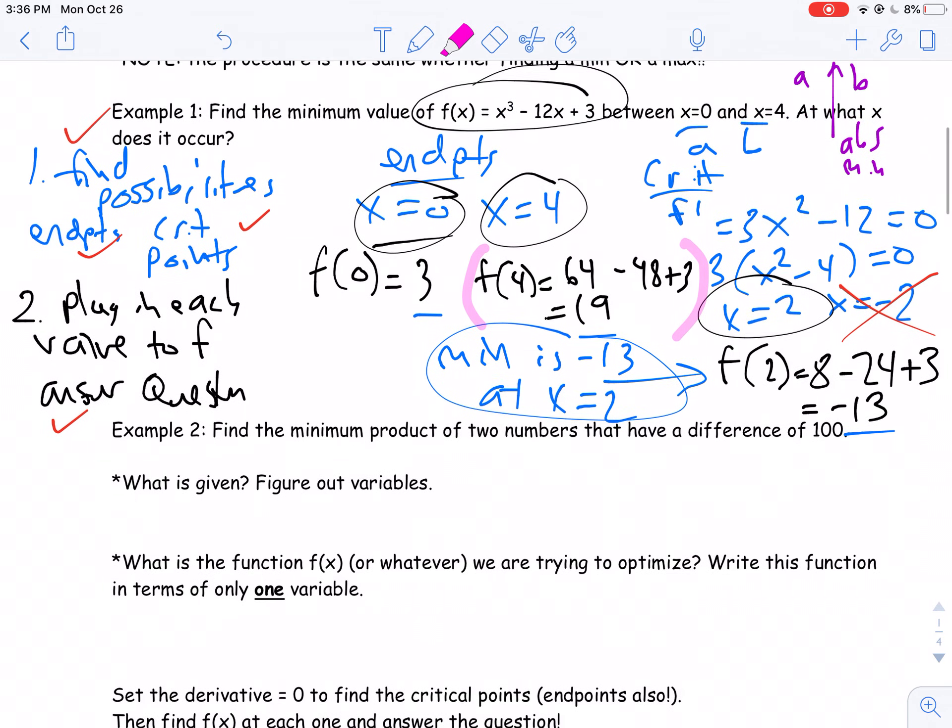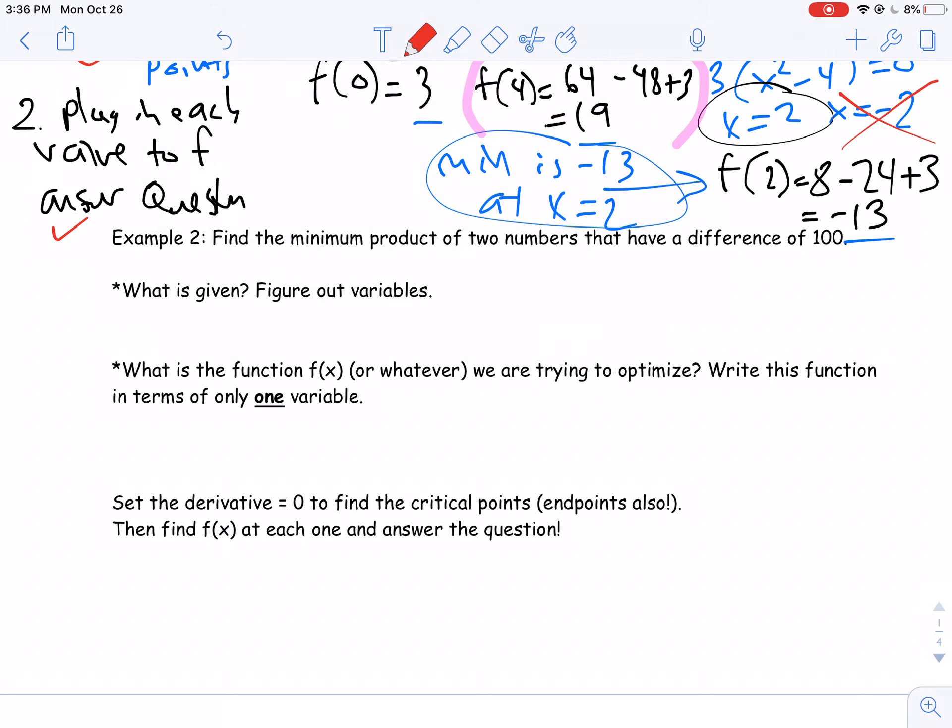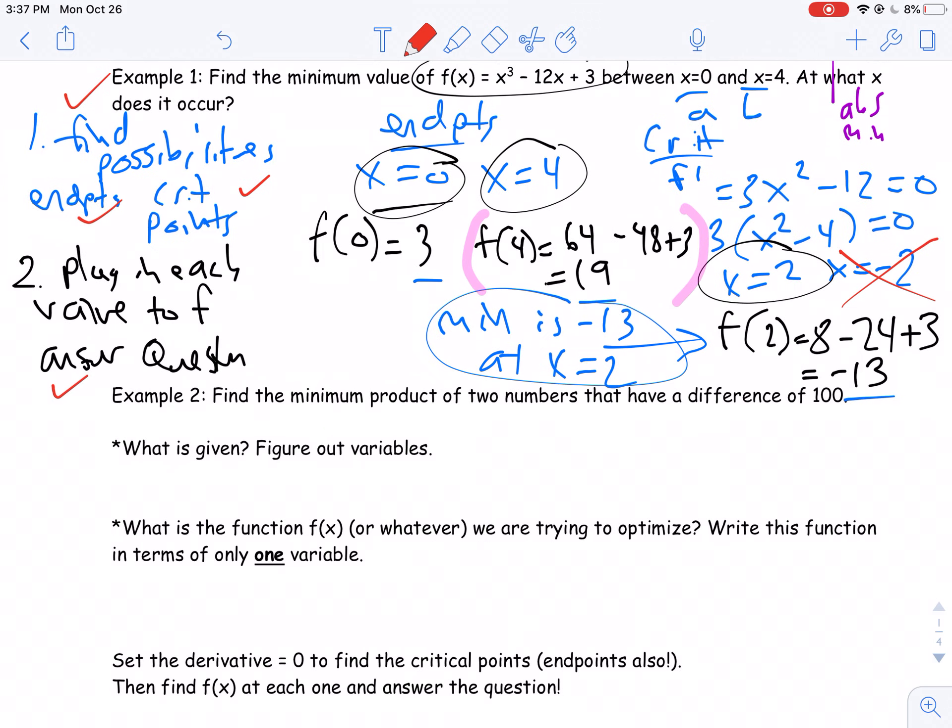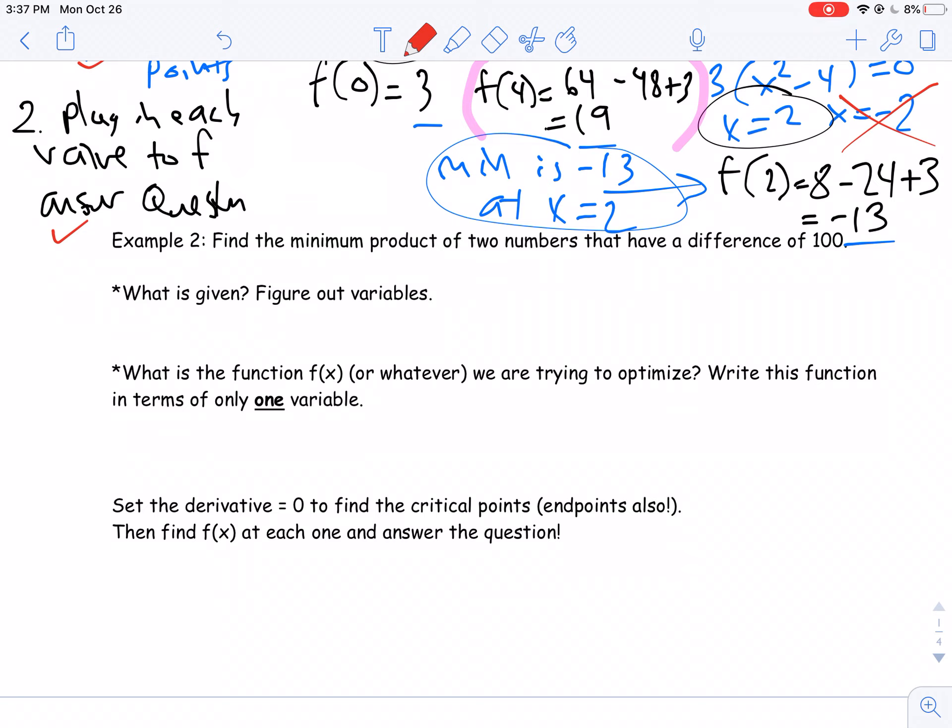Okay, let's get some word problems here. So these are where you're really going to see it in real life situations. And companies do this kind of analysis all the time. They try to find a maximum profit. They try to find a minimum amount of material they're going to use. They try and use the least amount of energy possible. These are real situations that companies always deal with, and calculus is how they do it. Okay, the minimum product of two numbers that have a difference of 100.